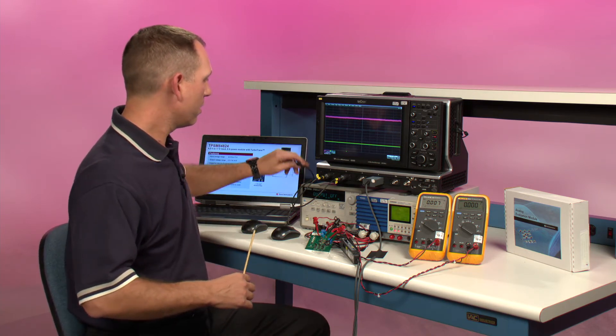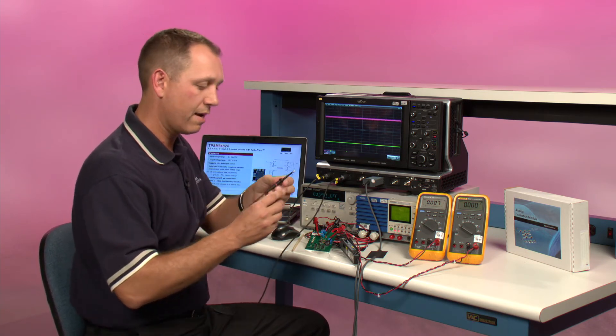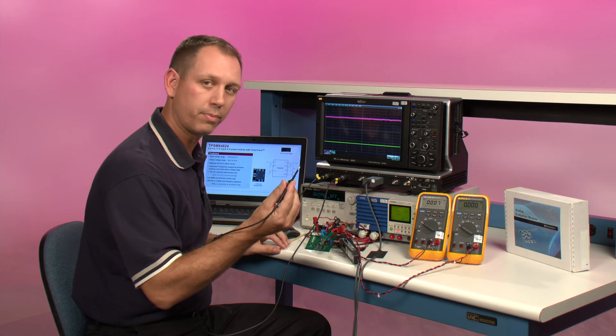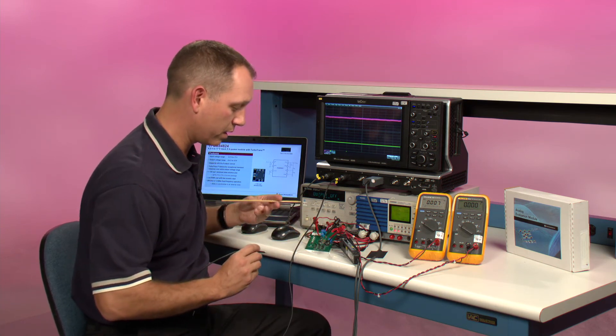So in order to measure the transient response, I have a scope with a closely coupled ground and I'm going to insert this into the output voltage socket which I pointed out earlier.